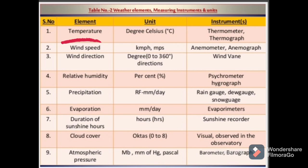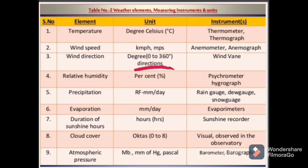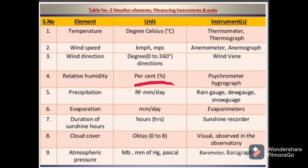First is temperature, expressed in degrees Celsius, using the instruments thermometer and thermograph. Second, wind speed with the unit kilometer per hour or miles per second, using the instruments anemometer and anemograph. Third, wind direction expressed in degrees from 0 to 360 degrees, using the instrument wind vane.